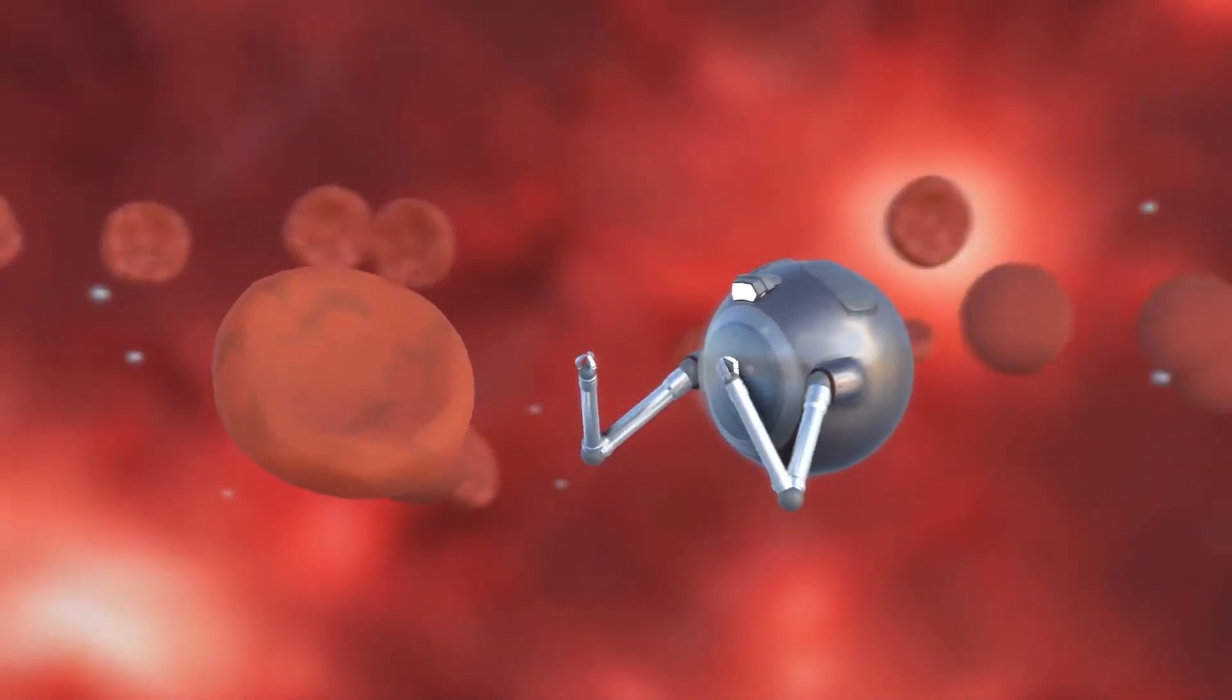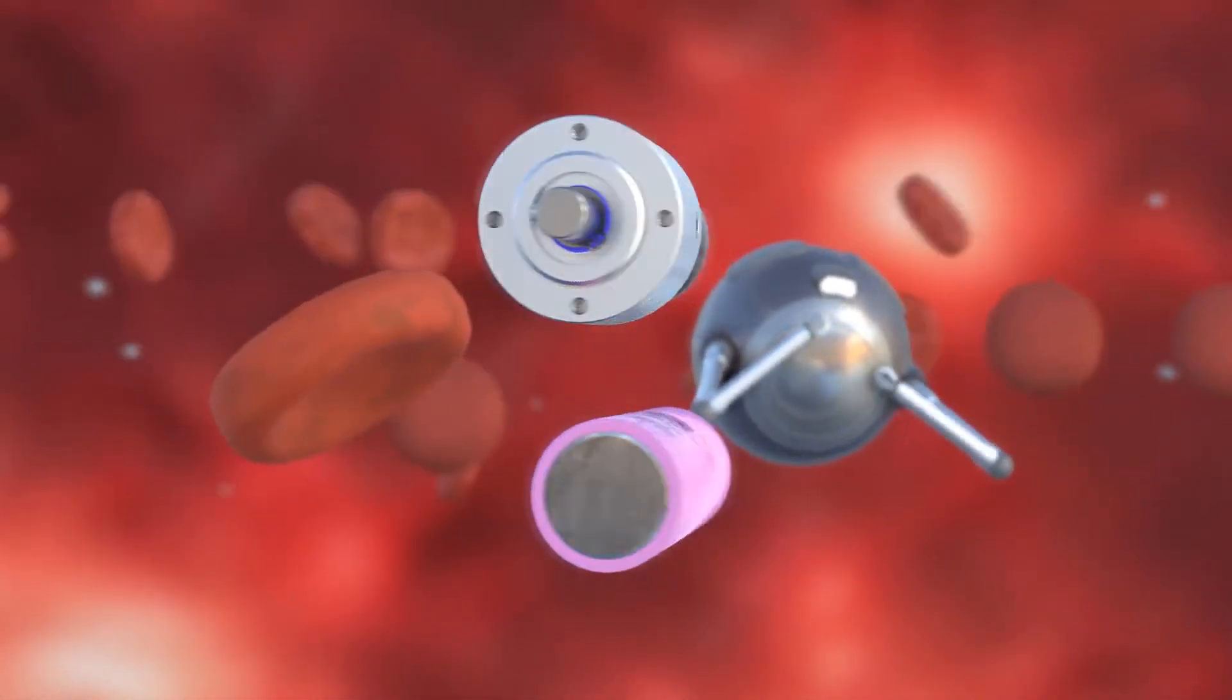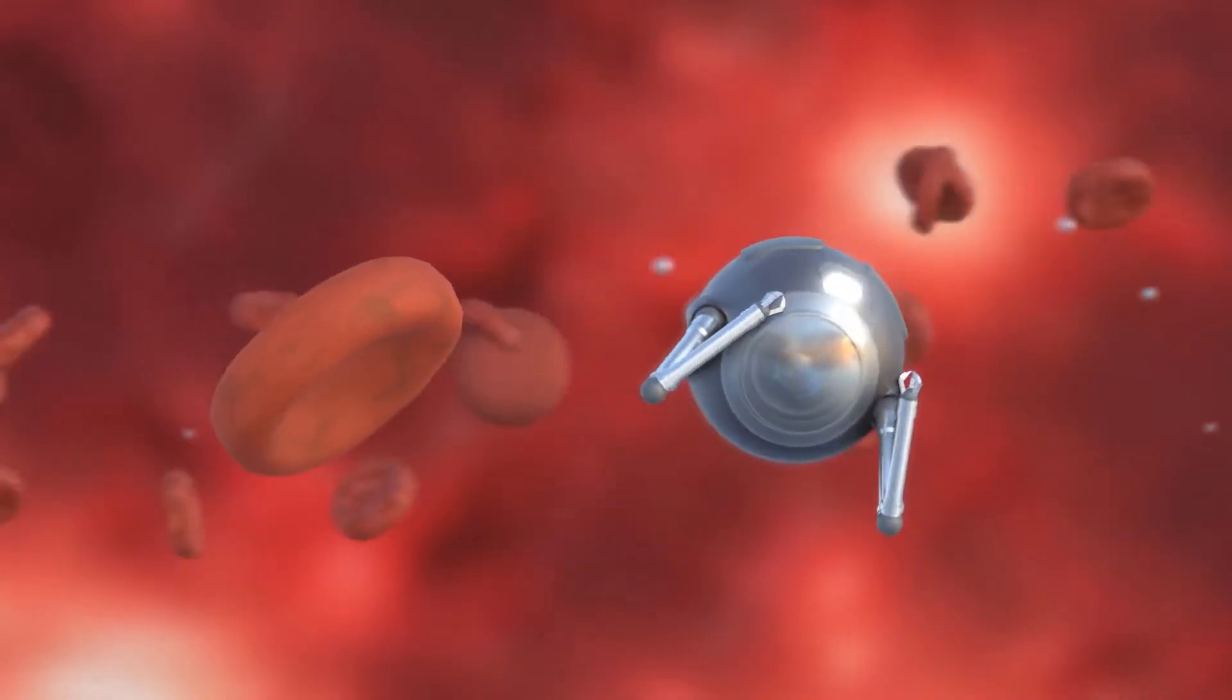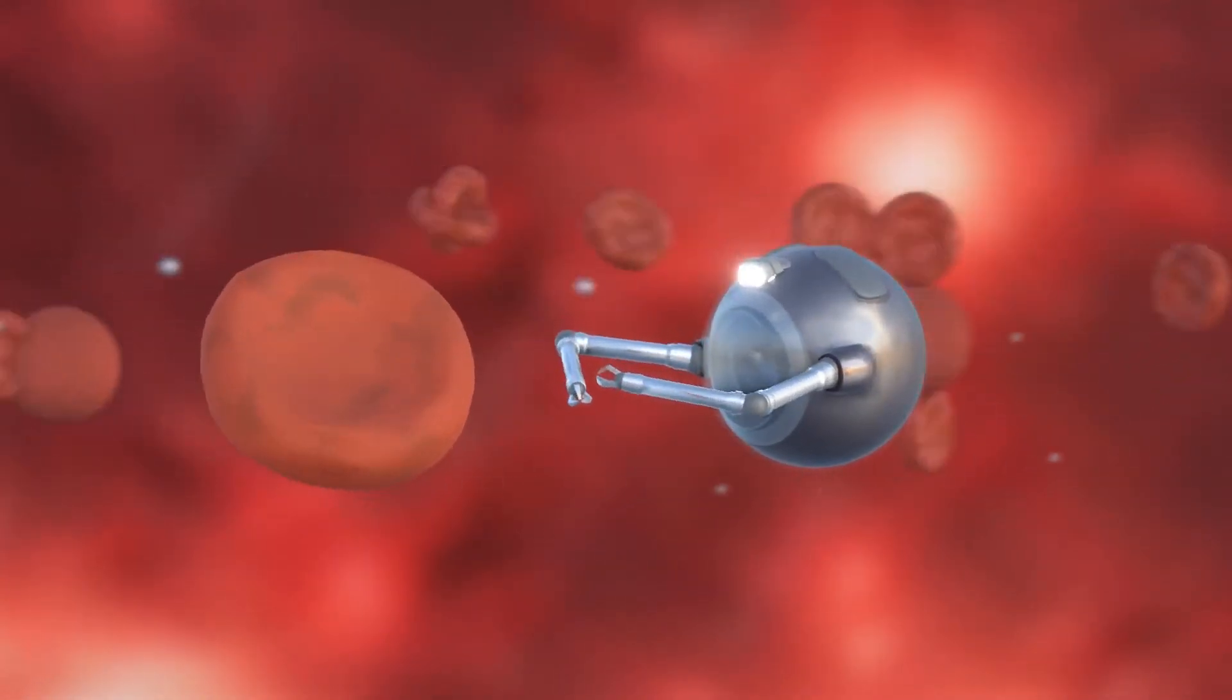Nanobots are roughly the size of red blood cells or smaller. Hence, using any moving mechanical parts such as motors and batteries is not currently possible, so we use several methods to make nanobots for different purposes.